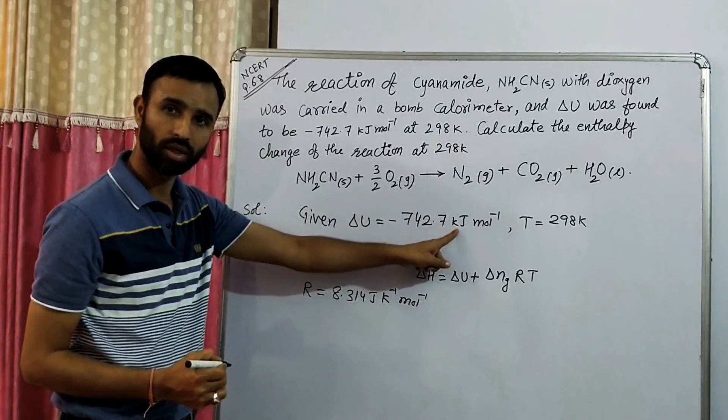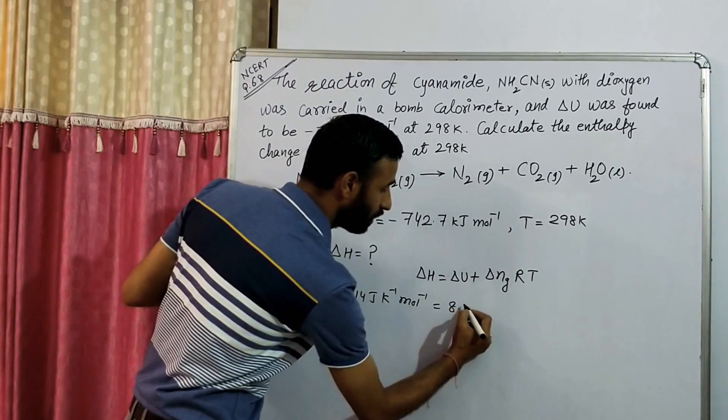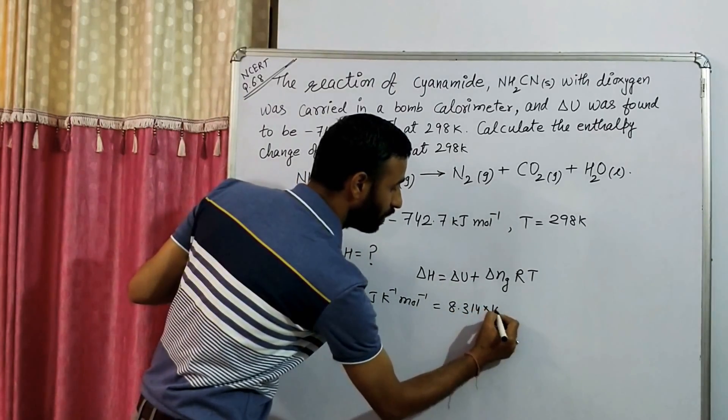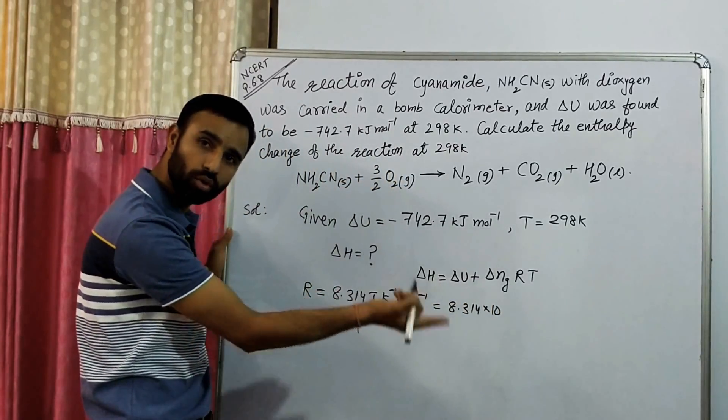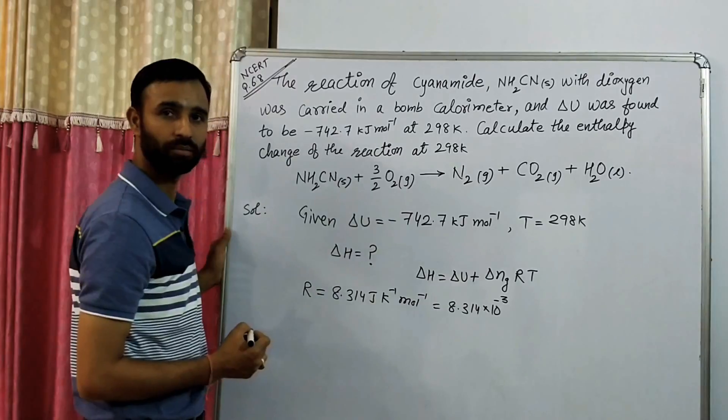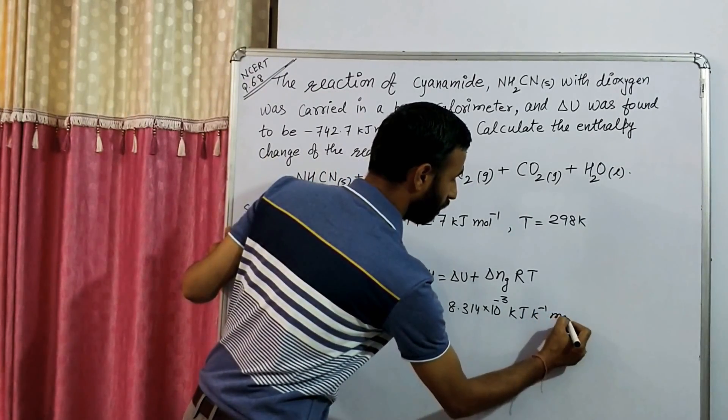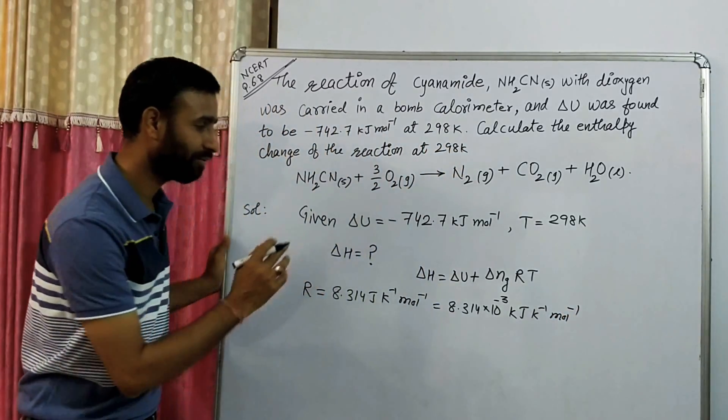But it is in kilojoules. So the value of R we have to use in kilojoules. To convert joules into kilojoules, we have to multiply it by 10 raised to power minus 3, so it becomes kilojoules per Kelvin per mole. What is left? Delta Ng.